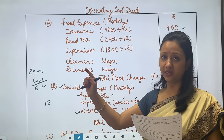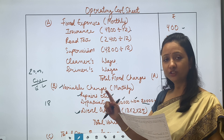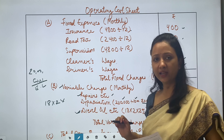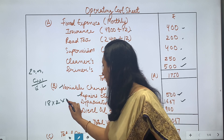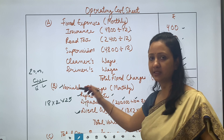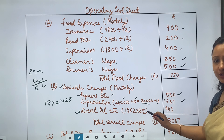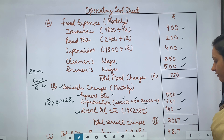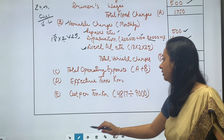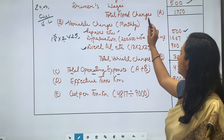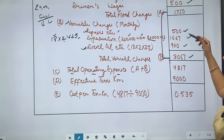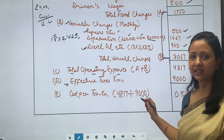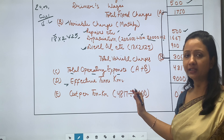Variable charges: Repairs = Rs. 500 per month (given directly). Diesel: rate per trip is given; one day = 2 trips (outward + return); monthly diesel = 18 × 2 × 25 = Rs. 900. Total variable cost = Rs. 1,400 + 900 = approx. Rs. 3,067. However repairs Rs. 500 is also included. Total operating expenses = fixed + variable = Rs. 4,817.